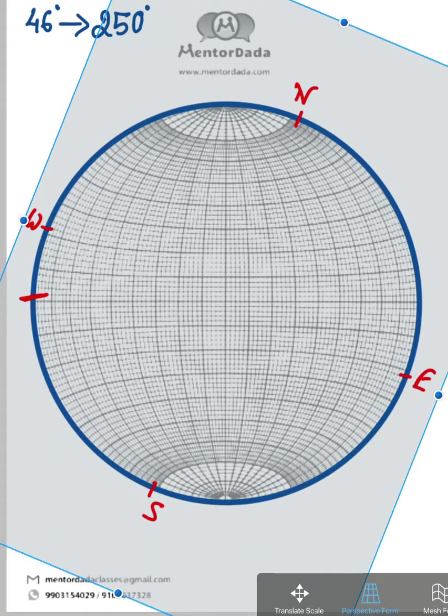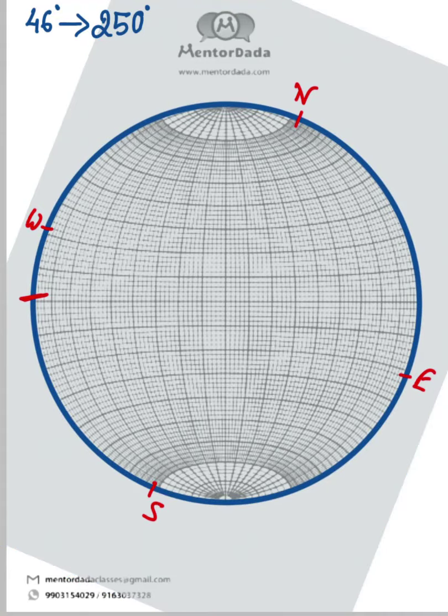Now we are done aligning 250 degrees in the east-west line. This is the 250 degrees direction.